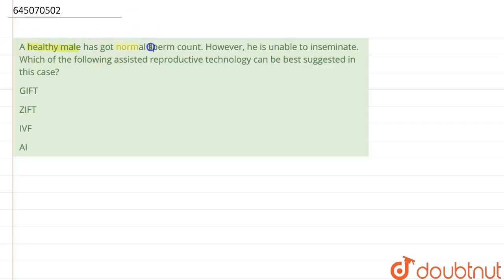A healthy male has got normal sperm count. However, he is unable to inseminate. Which of the following assisted reproductive technology can be best suggested in this case?